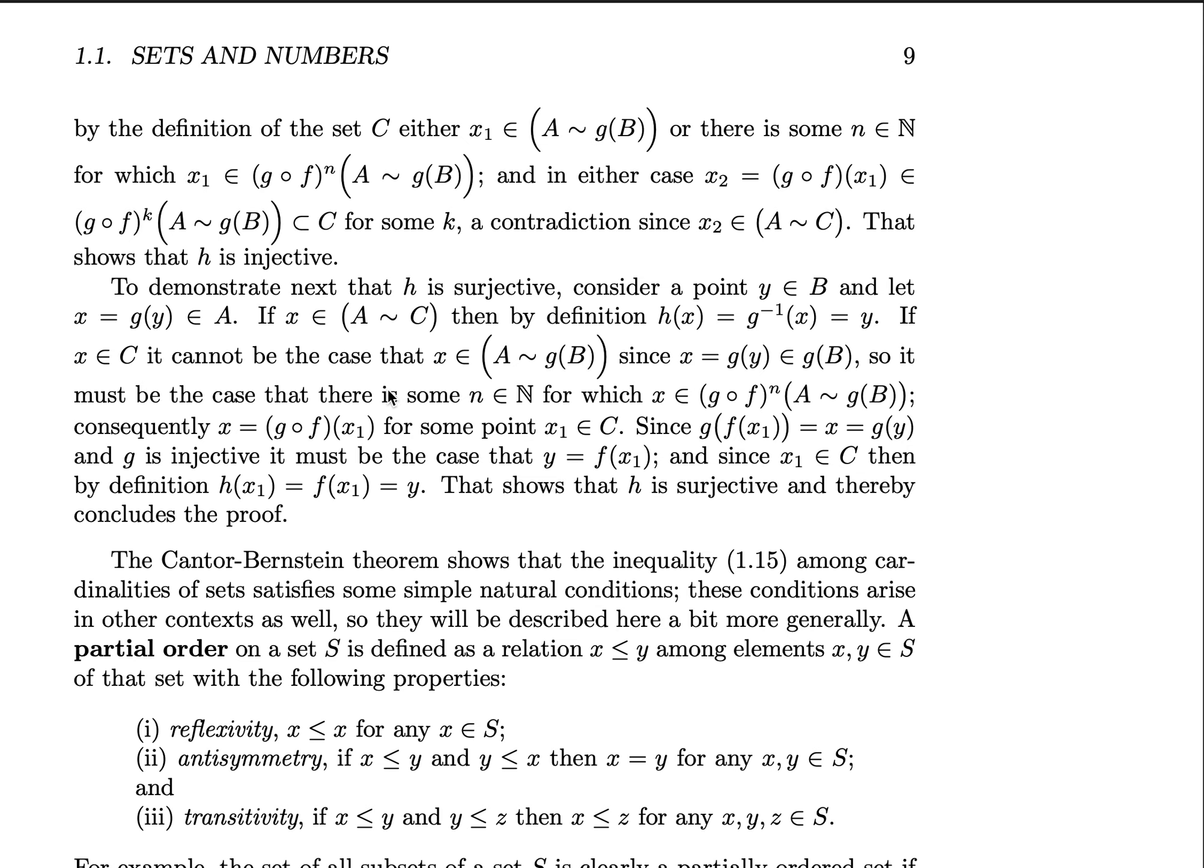If instead, x is a subset of C, it cannot be the case that x is a subset of A except for g(B), since x equals g(y) is an element of g(B). So there has to be some natural number n for which x is an element of the image of A except for g(B) under (g ∘ f) some number of times n.